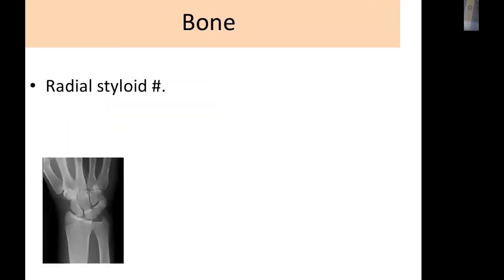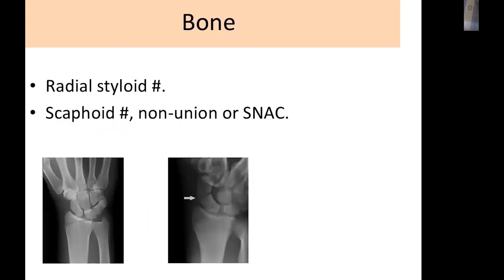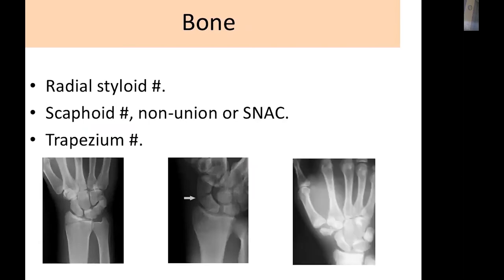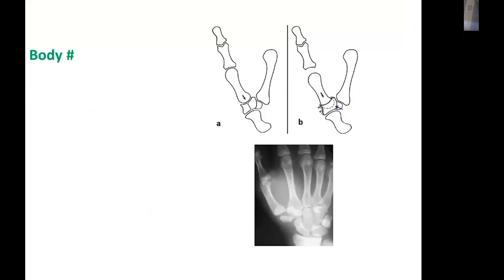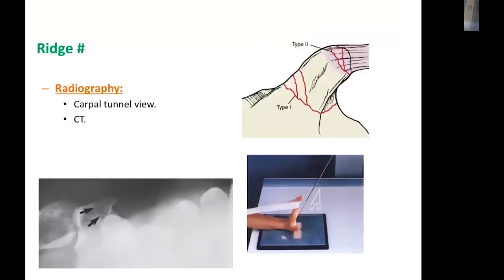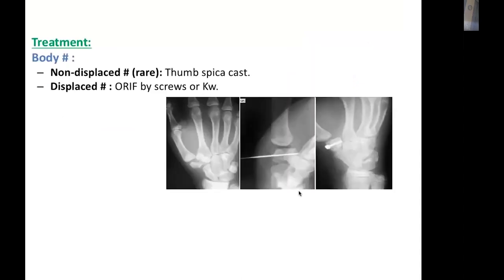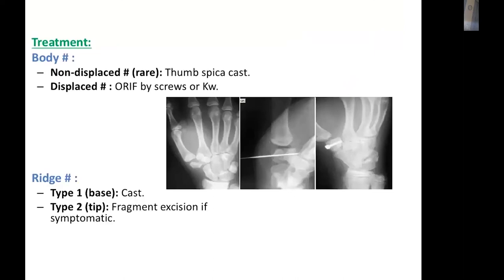For bony causes on the radial side, suspect a radial styloid fracture or scaphoid fracture in cases of trauma — sometimes a forgotten injury. Trapezium fractures can occur with axial loading of the thumb, either as a body fracture from compressive force or a ridge fracture of the trapezial ridge, diagnosed by CT or carpal tunnel view X-ray. Treatment ranges from K-wire or screw fixation to conservative management in non-displaced fractures.